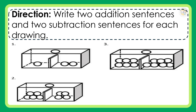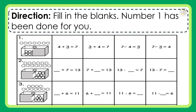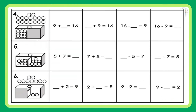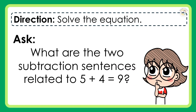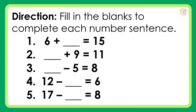Direction: write two addition sentences and two subtraction sentences for each drawing. Direction: find the missing number in an addition or subtraction sentence — fill in the blanks. Number one has been done for you. What are the two subtraction sentences related to 5 plus 4 is equal to 9? How do you find the missing number in an addition sentence or a subtraction sentence? Direction: fill in the blanks to complete each number sentence.